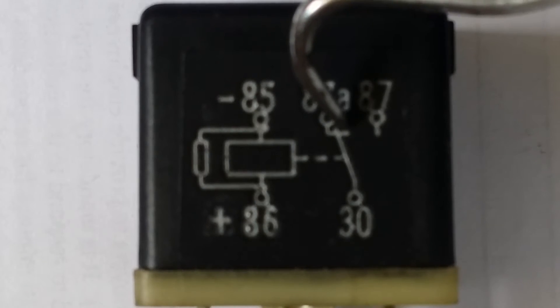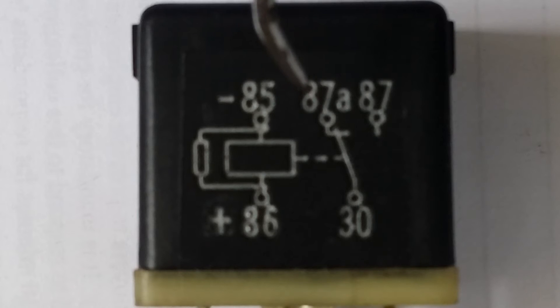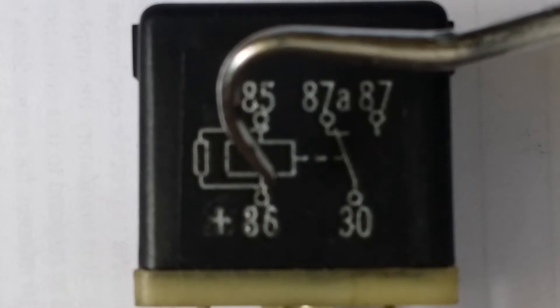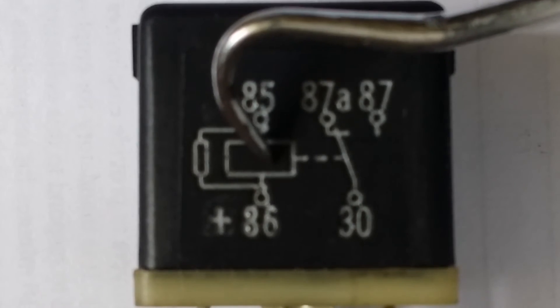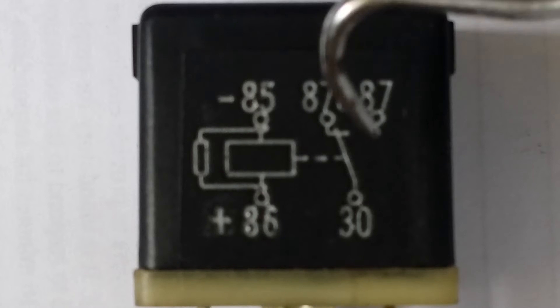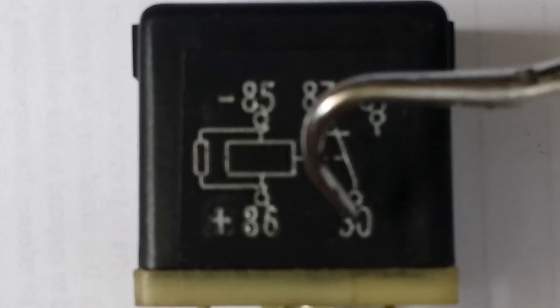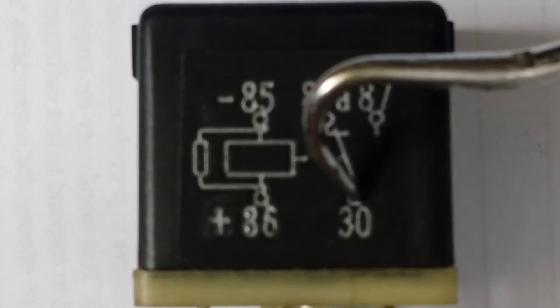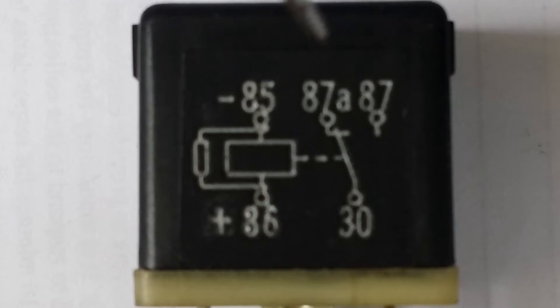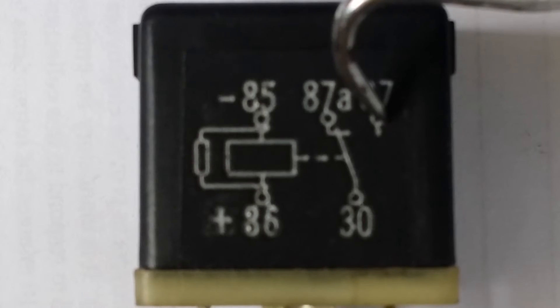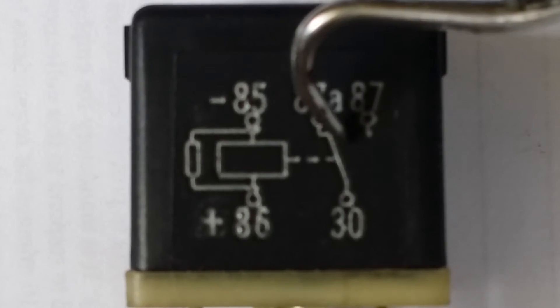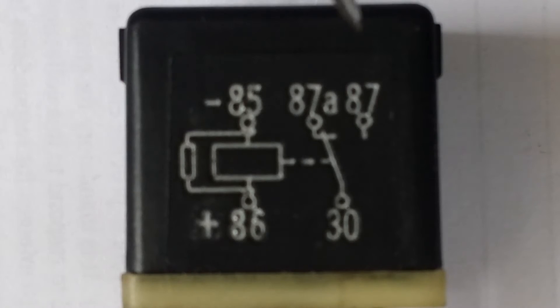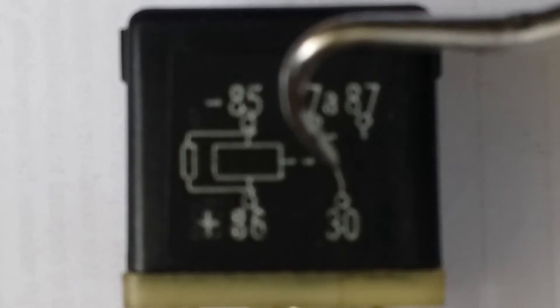Now to wire this up to lights or whatever, you would want to ground number 85, put a positive to number 86 on a switch. You switch your switch on - click - this is going to go over to 87. So then how you would run your lights on that circuit would be putting your battery volts - 12 volts fused - to number 30. That'll be your input. As soon as you switch your switch on, this is going to flop over to 87 and turn your lights on. And when you turn your switch off, it's going to go back over and they're going to cut off. That's as simple as it is, guys.